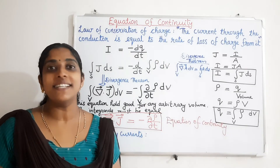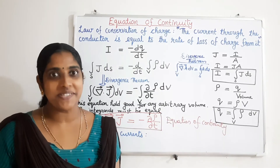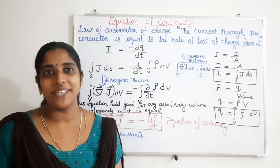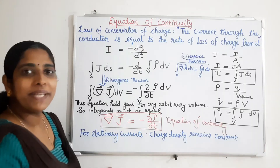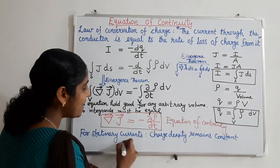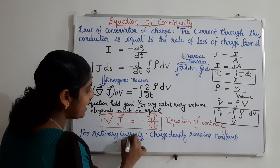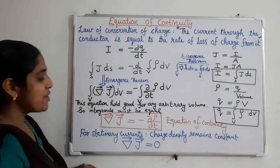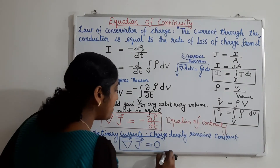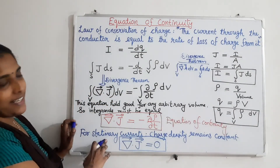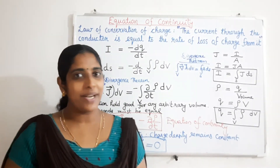For stationary currents, the charge density at any point within the region remains constant, so ∂ρ/∂t = 0. Therefore, the equation of continuity for stationary currents becomes del · J = 0. The general expression for the equation of continuity is del · J = −∂ρ/∂t.